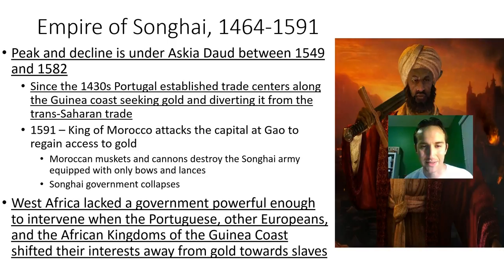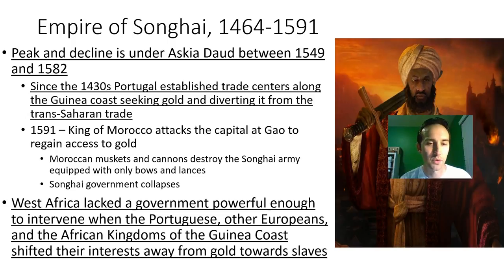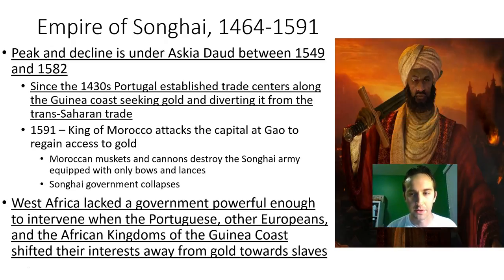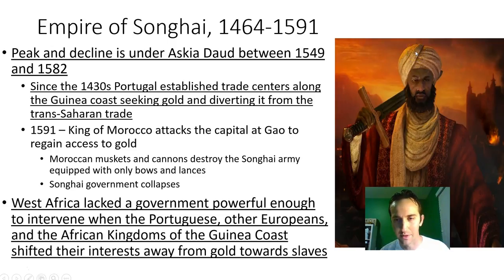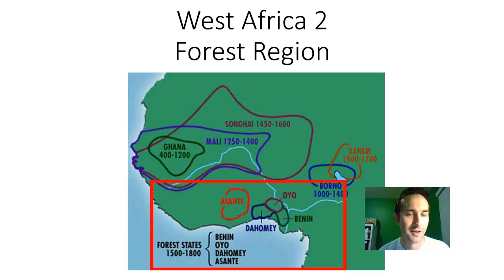In West Africa, they lacked a central government powerful enough to intervene when the Portuguese and then other Europeans, as well as some African kingdoms, started to suggest trading people instead of gold. This becomes the rise of the Atlantic slave trade, and there was no government strong enough to stand up and stop this slow descent into slavery. In the next video, we're going to focus on the forest region.